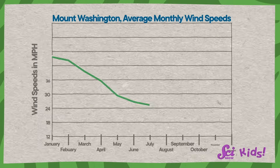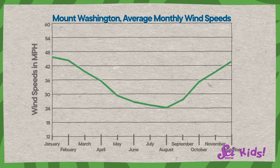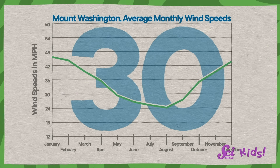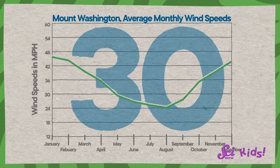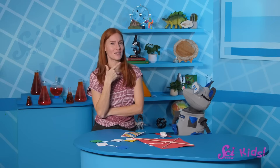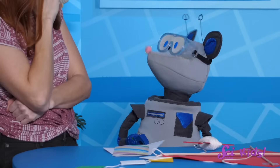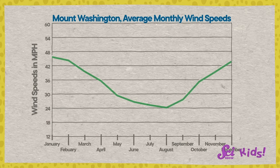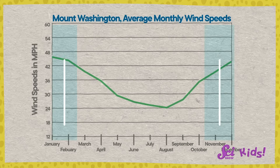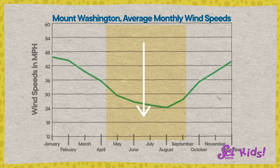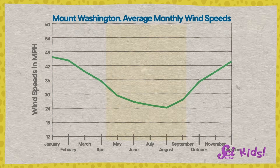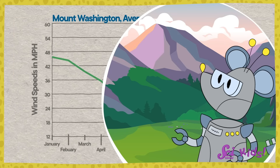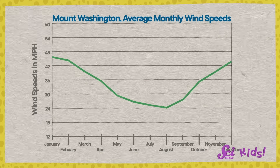Take a look at this graph, Squeaks — it shows us the average wind speed for each month of the year based on measurements taken over the past 30 years or so. What do you notice about the wind speeds? The average wind speed is faster in the winter and slower in the summer. So if you wanted to take a trip to the mountain, you could use a graph like this to help you plan ahead.